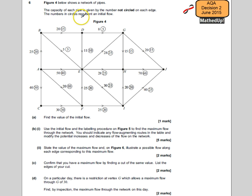The numbers in circles represent an initial flow. So initially through AB there's 20 flowing through, which means there's capacity for an extra 5 to flow through.